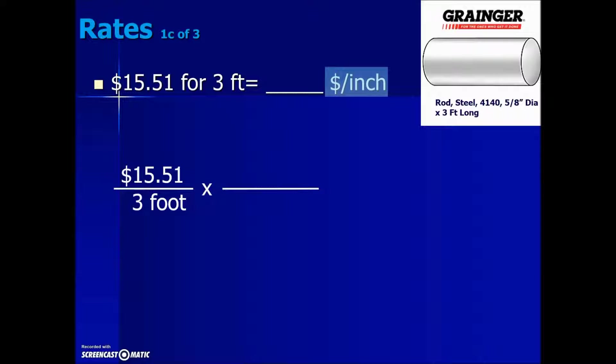So our conversion factor will be set up so that the foot factor is in the numerator with the inch factor in the denominator. Here we have equivalent factors over one another. This is a fraction ultimately equal to 1. Multiplying by this special 1 allows us to cancel out the feet factors. Multiplying numerators, we have 1551 over denominators. Here we have 3 times 12 resulting in 36. To simplify this, we'll take the numerator 1551 divided by 36 gives us the price per inch.